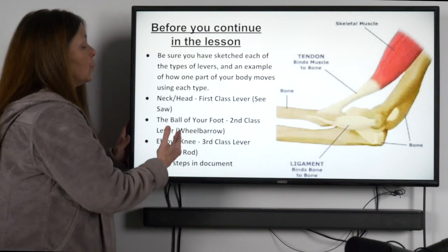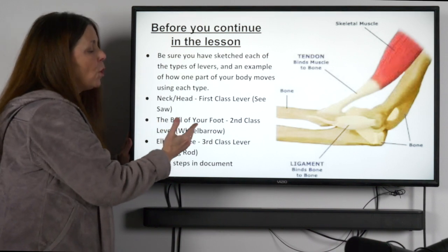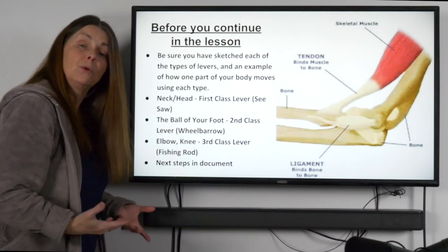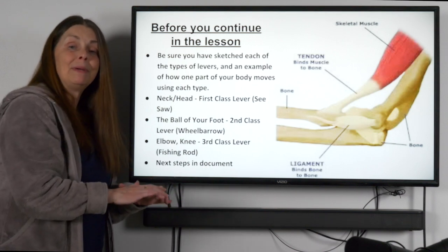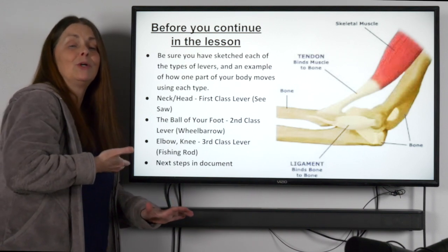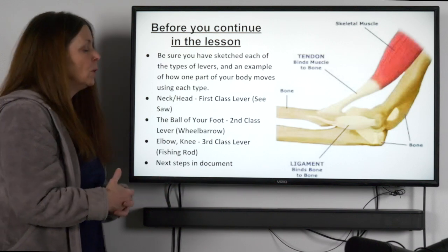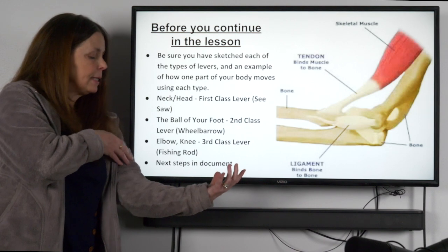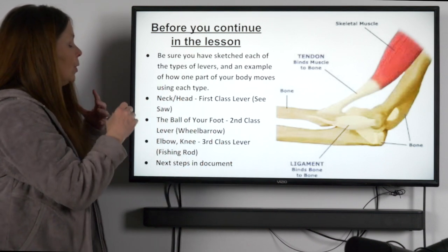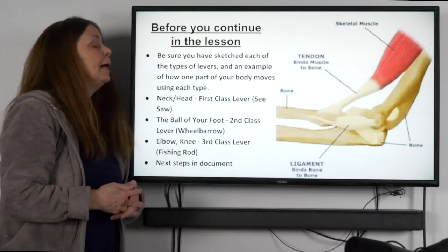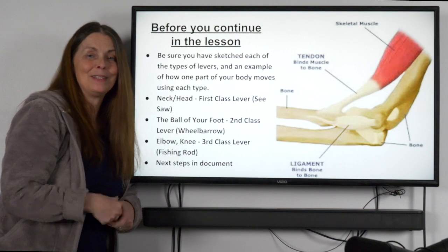Let's review really quick. Your neck and head work like a first class lever — like a seesaw rocking back and forth with the pivot in the middle. The ball of your foot works like a second class lever — like a wheelbarrow — where the weight of your body sits on your foot, the ball of your foot is the stationary pivot point, and your heel is lifted by the effort. Lastly, the elbow — and knee — work like a third class lever: your bicep is attached between the pivot point and the load, pulling your arm up like a drawbridge. Follow the next steps in the document, feel free to email us with any questions — we miss you and hope you're happy and healthy. See you soon! Bye-bye.